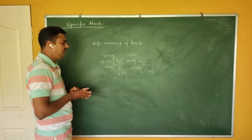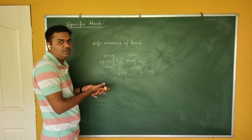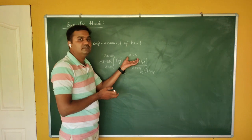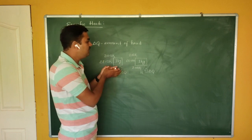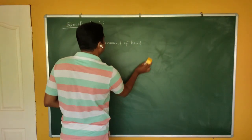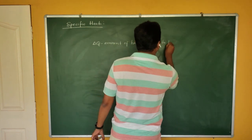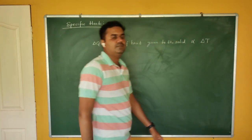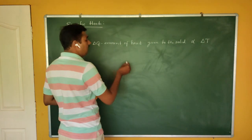Obviously, in the second case you require more amount of heat. In the first case you supply heat to raise the temperature by 3 Kelvin, but in the second case it is 10 Kelvin, so you have to supply more heat. Therefore, delta Q — the amount of heat given to the solid — is directly proportional to the change in temperature. If you require more temperature change, you have to supply more heat.